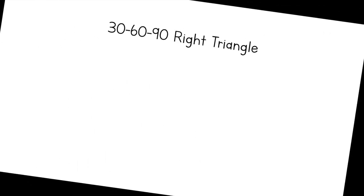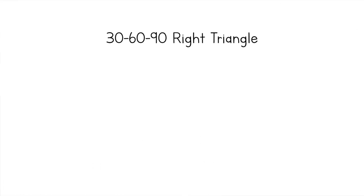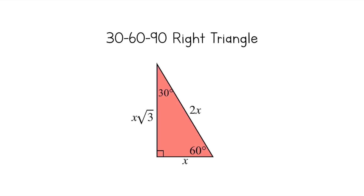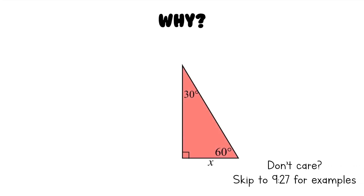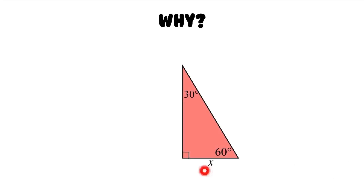Now let's move on to 30-60-90 right triangles. The side opposite the 30 degree angle is x, the hypotenuse is two times that, and the longer leg is the short leg times the square root of three. To see why this works, let's take a 30-60-90 right triangle and call its short side x. We're going to duplicate this triangle — copy, flip, and place it right next to the original.